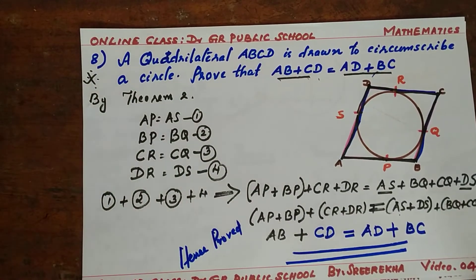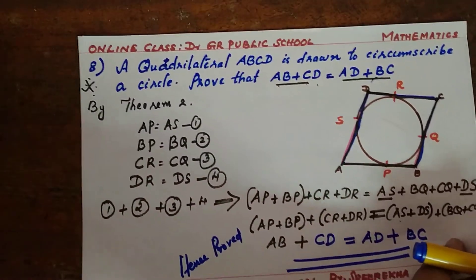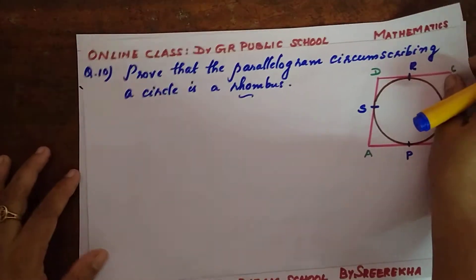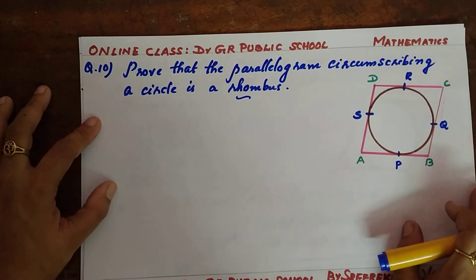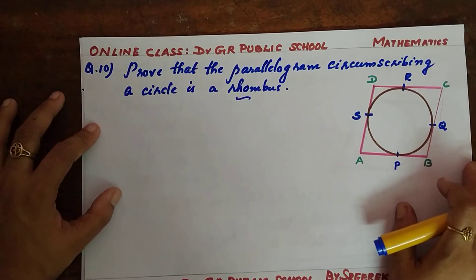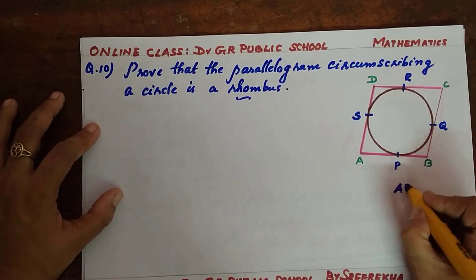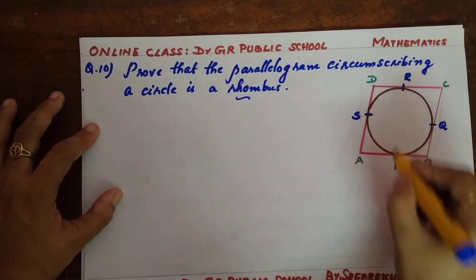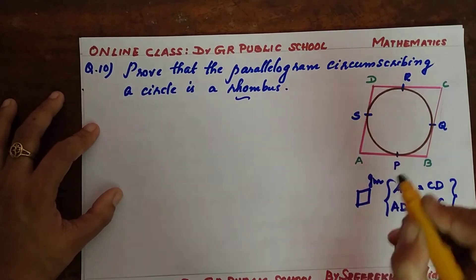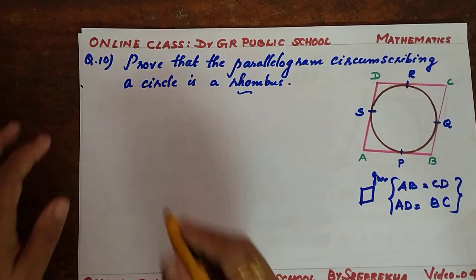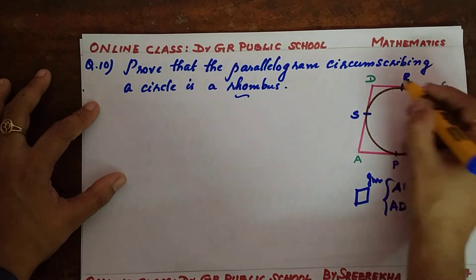Tangents from an external point to the circle are equal in length. Now the next question: we need to prove that a parallelogram circumscribing a circle is a rhombus. The condition for a parallelogram is that opposite sides are equal: AB equals CD and AD equals BC. For a rhombus, all sides must be equal, so we need to prove AB equals BC equals CD equals DA.